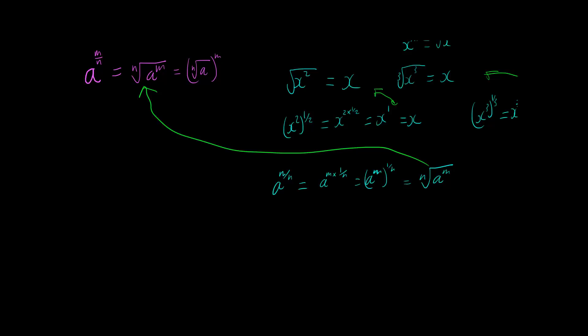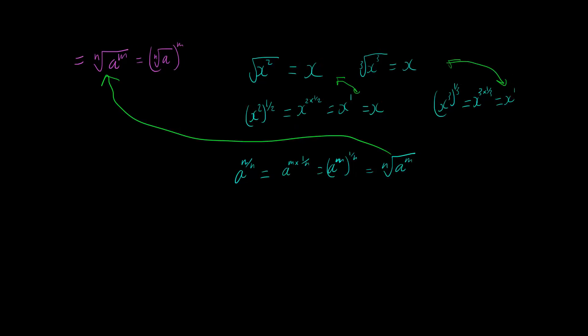So where do we get this part from? That part comes from the fact that if I have a slightly different play with this. So I'm going to start off again with a to the m over n and rewrite it this time as one over n times m.